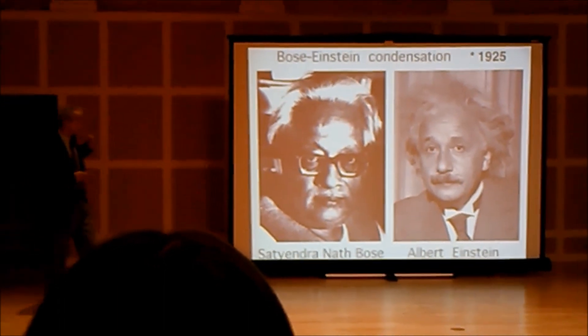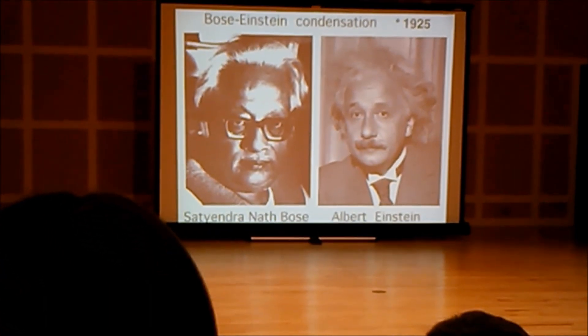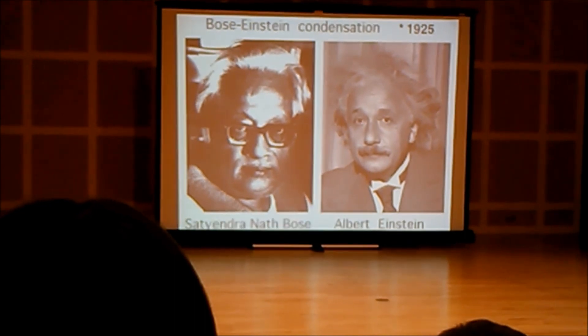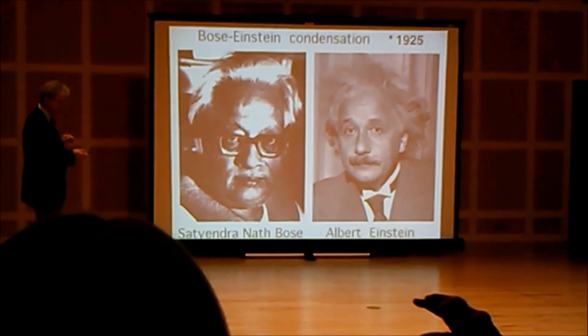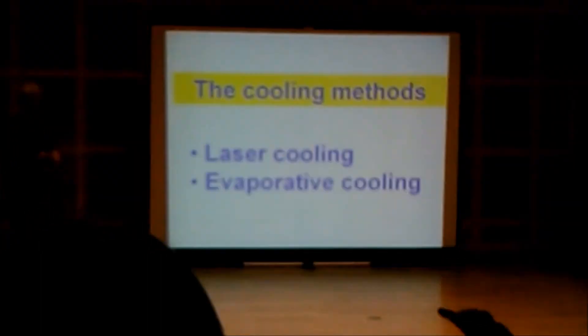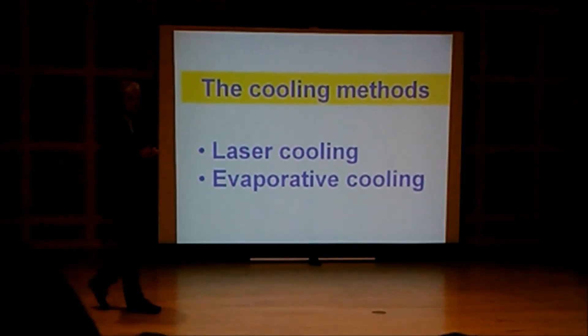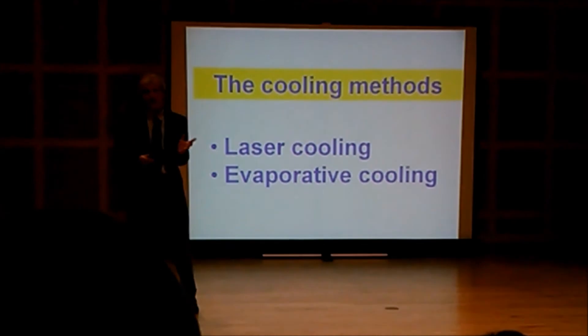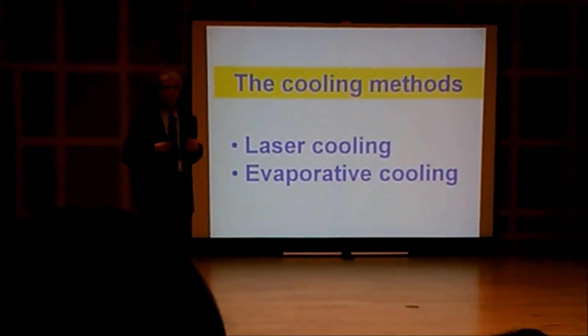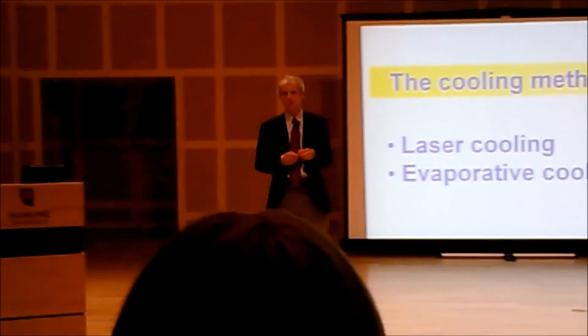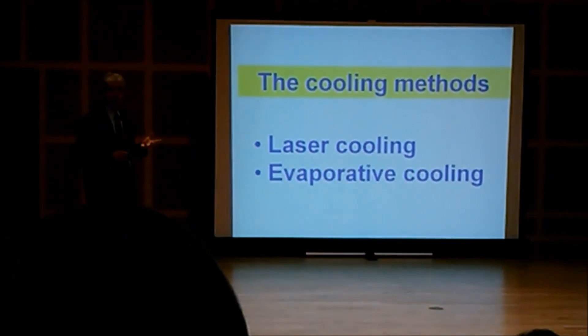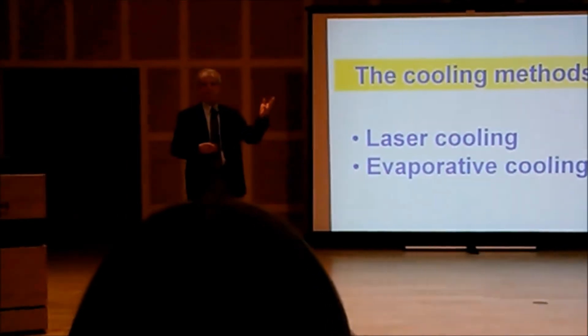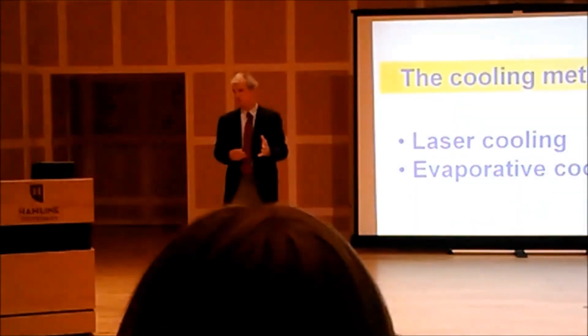So this phenomenon that Bose-Einstein condensation, this new form of matter, would exist, has a very long tradition. It was predicted in 1925, but the fact that it was only realized 70 years later meant that some new methods, some experimental methods, had to be developed. And what was missing was methods to cool down gases very, very close to absolute zero.